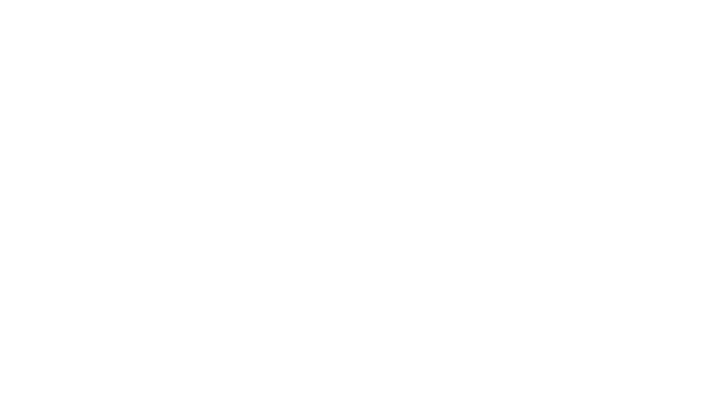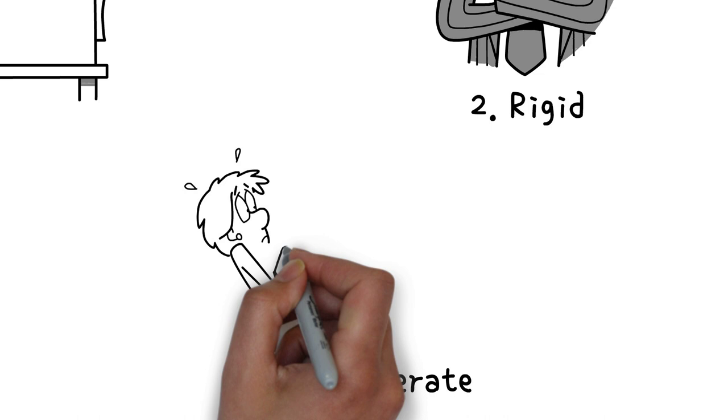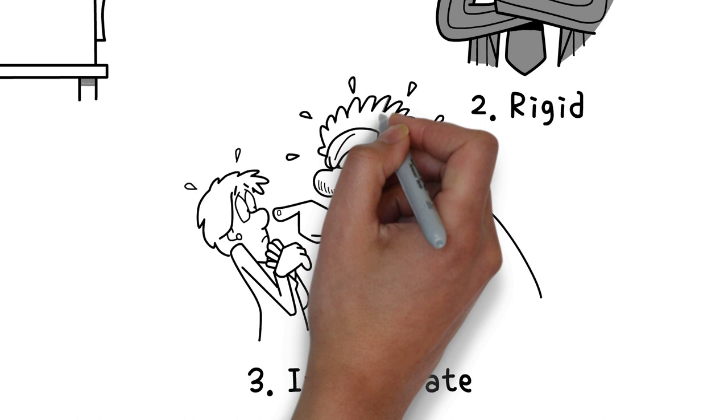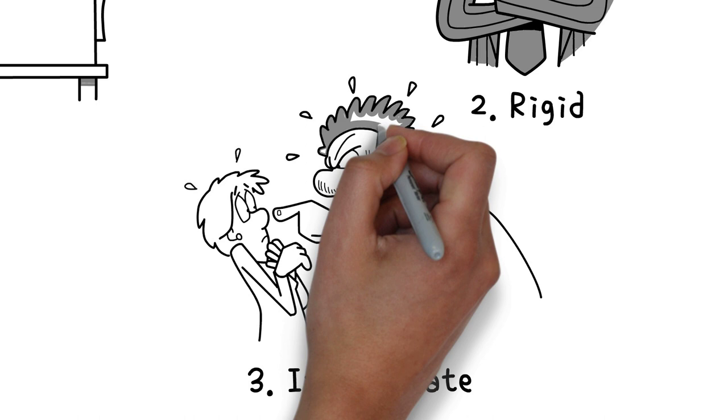Intemperate. Does your line manager lose their temper easily? Is your boss's mood hard to predict? Here we're looking at an intemperate leader. Bad leaders lack self-control and struggle to manage their emotions. They lack empathy and emotional intelligence.